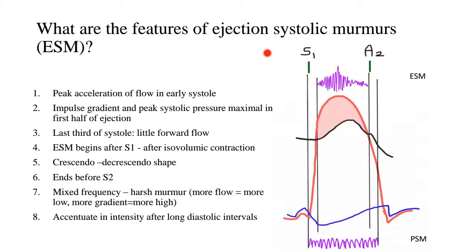What are the features of ejection systolic murmurs, or ESM for short? The impulse gradient is a physiological phenomenon seen in normal people, and an abnormal counterpart of the impulse gradient would essentially be an ejection systolic murmur. In ESM, there is peak acceleration of flow in early systole and the impulse gradient and peak systolic pressure is maximal in the first half of ejection — it is pathological. In the last third of systole there is little forward flow, so there is maximal gradient in the early part of systole and then towards the end there is less flow.